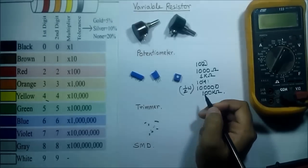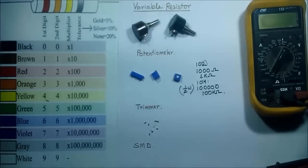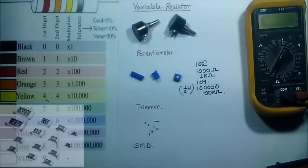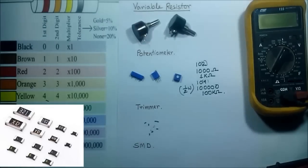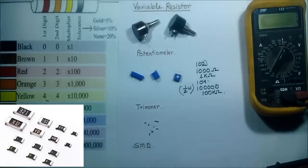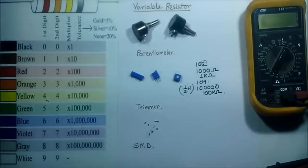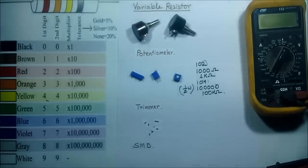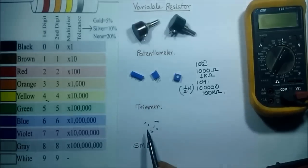Now come to the SMD resistor, which is a fixed resistor. This type of resistor is widely used nowadays in all types of electronic circuits. To identify the wattage of an SMD resistor, we consider the length and width of the SMD and find it from the datasheet. No wattage is written on the SMD itself.